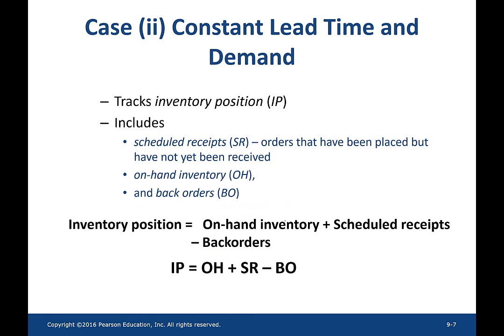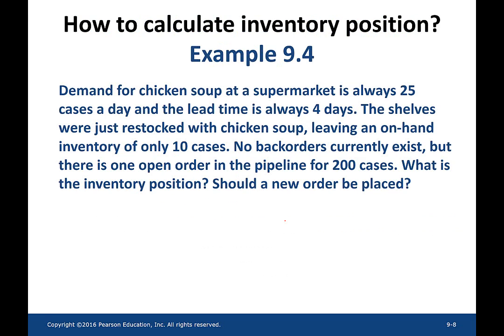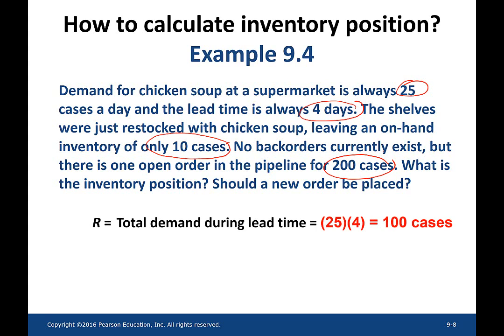Let us look at how inventory position and reorder point interact using a small example — this is a good time to pause the video, read the problem, and come back. A supermarket has a daily demand of 25 cases and a lead time of 4 days. On-hand inventory is 10 cases, and they are scheduled to receive 200 cases. The reorder point is demand times lead time, which equals 100 cases.